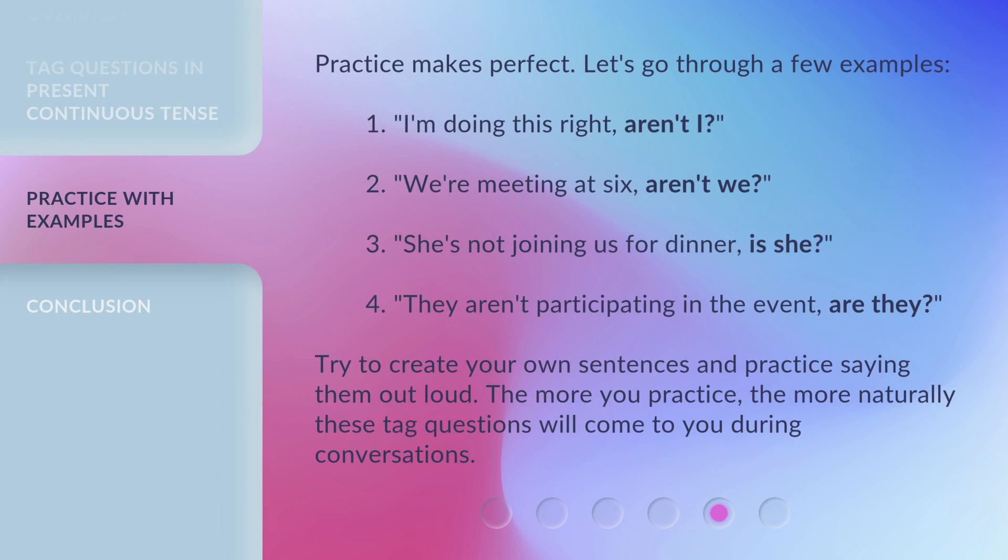Practice makes perfect. Let's go through a few examples. 1. 'I'm doing this right, aren't I?' 2. 'We're meeting at 6, aren't we?' 3. 'She's not joining us for dinner, is she?' 4. 'They aren't participating in the event, are they?' Try to create your own sentences and practice saying them out loud. The more you practice, the more naturally these tag questions will come to you during conversations.